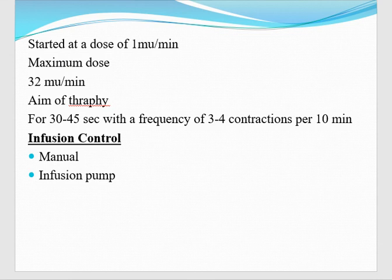We will start the dose at 1 milli-international unit per minute. Maximum dose — we can increase up to 32 milli-international units per minute. The aim of syntocinon infusion is that there should be adequate uterine contractions. Adequate uterine contractions are 30 to 45 seconds duration, with 3 to 4 contractions in 10 minutes. When there are 3 to 4 contractions in 10 minutes of 30 to 45 mmHg, it means there is adequate uterine contraction.